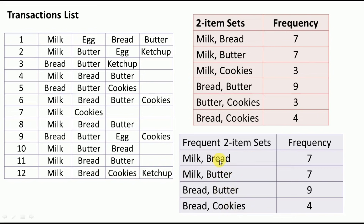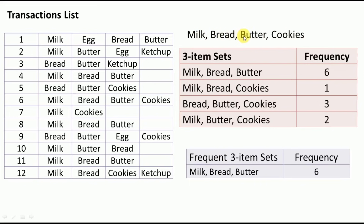Next, we generate three-itemsets from the four frequent items: milk, bread, butter, and cookies. The combinations are: milk-bread-butter, milk-bread-cookies, milk-butter-cookies, and bread-butter-cookies — four possibilities.